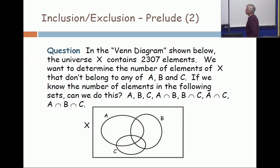In this Venn diagram, the universe contains 2,307 elements. We want to determine the number of elements in the universe that don't belong to any of A, B, and C. If I were to give you the quantities A, B, C, A intersection B, B intersection C, A intersection C, and A intersection B intersection C, could you do it?